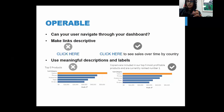The principle of operability asks whether your user can actually navigate through your dashboard. Most guidelines for this principle apply to Tableau software itself, but as an individual you can: make links descriptive — don't just say 'click here,' say 'click here to see sales over time by country.' Also use meaningful descriptions and labels; instead of 'top 5 products,' use a title like 'copiers are included in our top 5 most profitable products and are currently ranked number 1,' so screen reader users have full context.